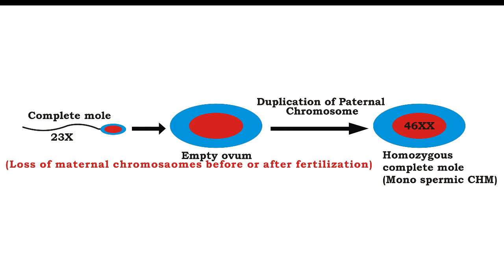Then, the dispermic complete hydatidiform mole, in which maternal chromosomes are lost and there is fertilization by two sperms — either both are 23X, or one is 23X and the other is 23Y. As a result, the dispermic complete hydatidiform mole is either 46XX or 46XY.